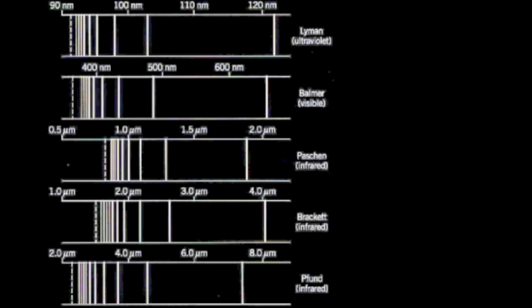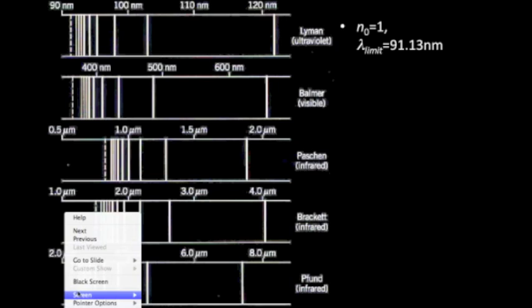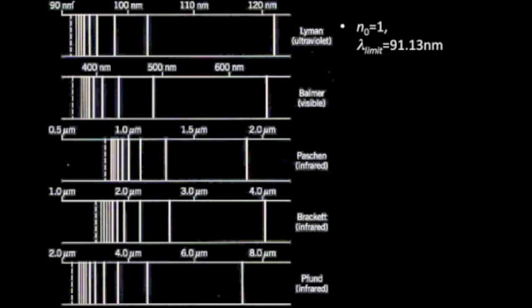Eventually, a sequence was found in the ultraviolet, referred to as the Lyman series. This is the particular case where n0 is 1, and the asymptotic value here is 91.13 nanometers. So you can see this is the area where wavelengths approach as n gets larger and larger.